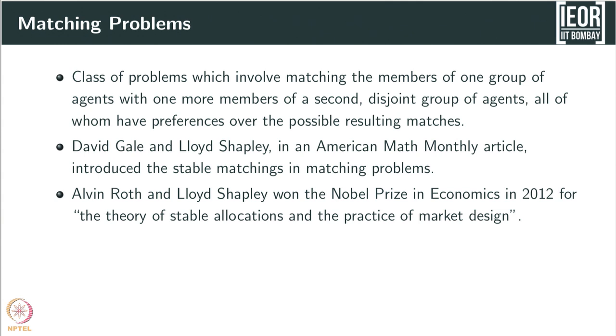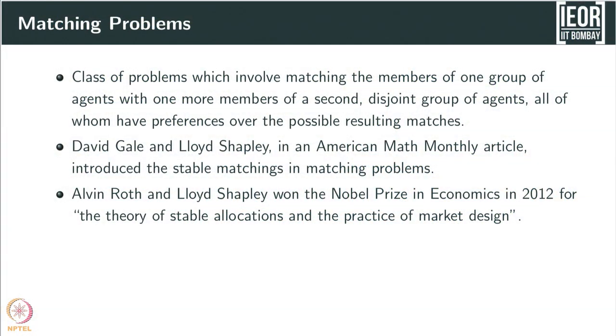There is a group of people on one side and another group on the other side, and each person has a preference over the other side. You want to match the people between these two groups. This problem was basically introduced by David Gale and Lloyd Shapley, and it has generated huge interest. Eventually, Alvin Roth and Lloyd Shapley won the Nobel Prize for their work in this area, generally known as market design.